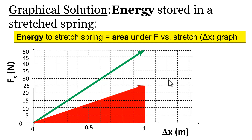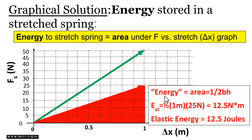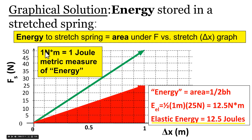If we shade in that area, since this is a positive linear relationship, we have the area of a triangle. So the elastic energy stored equals one-half times base times height. Our red spring had a slope of about 25 newtons per meter, so it takes 25 newtons to stretch it one meter. The energy is one-half times one meter times 25 newtons, giving 12.5 newton meters, or 12.5 joules. In physics, we use the joule to represent a newton times a meter — our metric measure of energy.